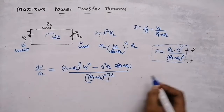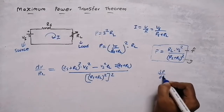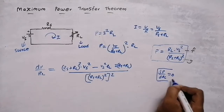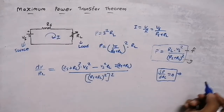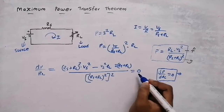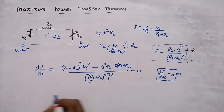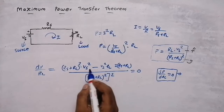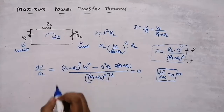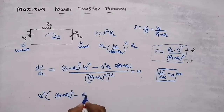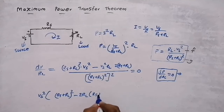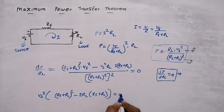Now for finding the maximum, we equate dP/dRl equal to 0. Setting the expression to zero, the denominator term becomes zero, and we work with the numerator. Vs squared is common, so taking it outside: (Rs plus Rl) squared minus Rl into 2(Rs plus Rl) equals 0. Expanding (Rs plus Rl) squared gives Rs squared plus Rl squared plus 2·Rs·Rl.